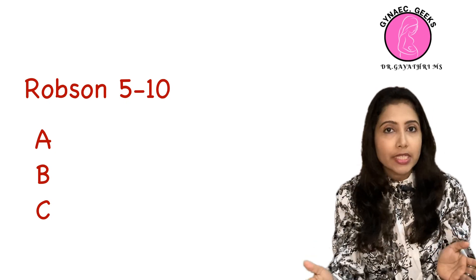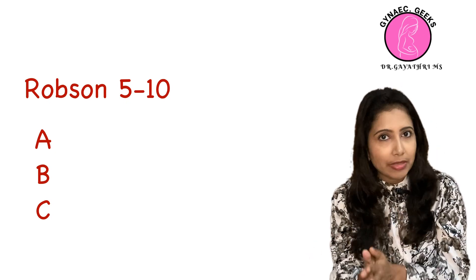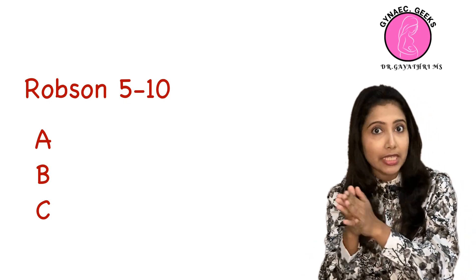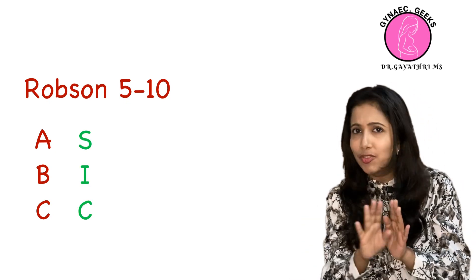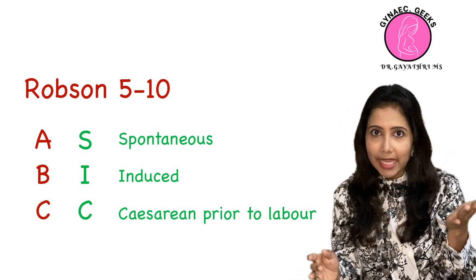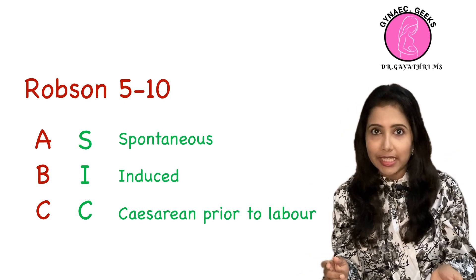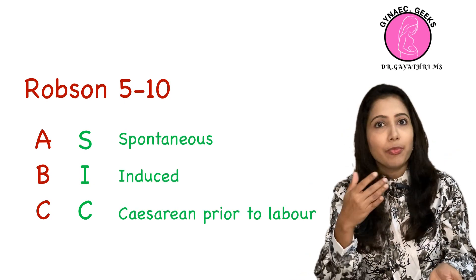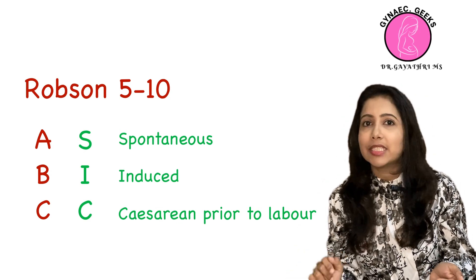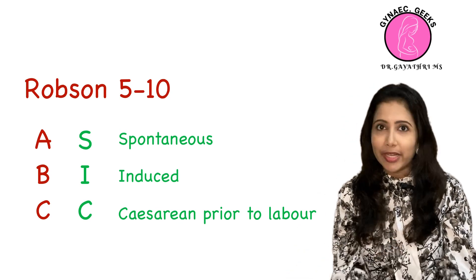From Groups 5 to 10, each group can be further subdivided as A, B, and C using the SIC mnemonic: A is for spontaneous labour, B is for induced labour, and C is for cesarean section prior to labour.